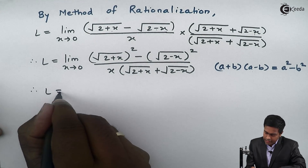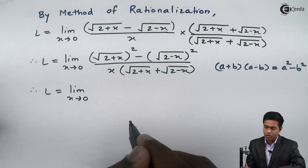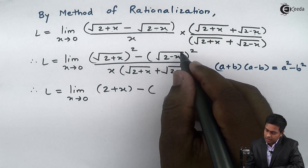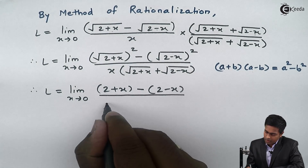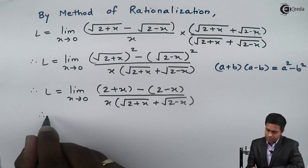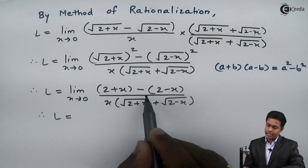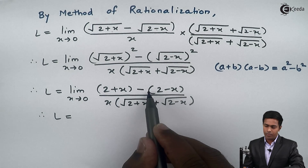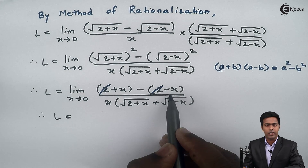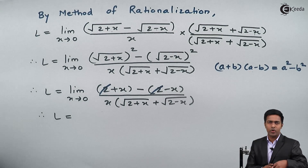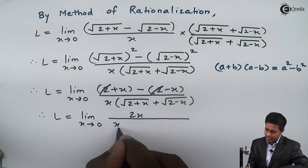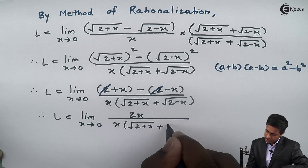The square and square root cancel, giving us (2+x) minus (2−x) in the numerator, over x times [√(2+x) plus √(2−x)]. Expanding: the 2 and minus 2 cancel, and minus x becomes plus x, so the numerator becomes x plus x, which is 2x. We now have limit x tends to 0 of 2x over x times [√(2+x) plus √(2−x)]. The x in the numerator and denominator cancel.